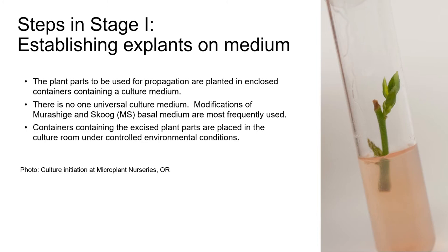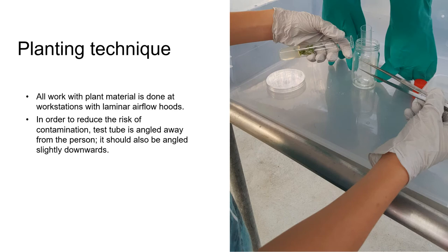This cutting in the test tube is probably barely an inch long, which is actually quite big compared to a lot of material worked with in tissue culture. All work with plant material is done at workstations with laminar airflow hoods. There are very specific plant and equipment handling techniques, all designed to reduce the risk of contamination. In the photo, you can see one of our students transplanting miniature rose cuttings onto a rooting medium. To reduce the risk of contamination, he's got the test tube angled away from him, and ideally the test tube should also be angled slightly downwards to reduce the risk of bacterial and fungal spores entering the test tube.